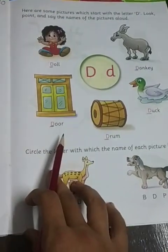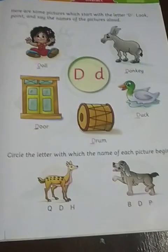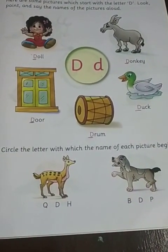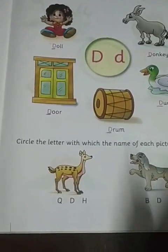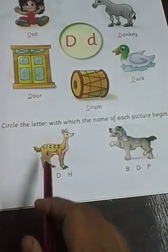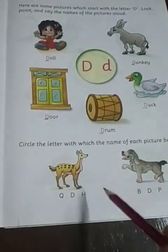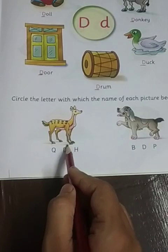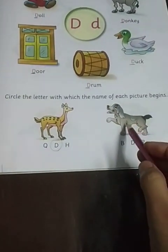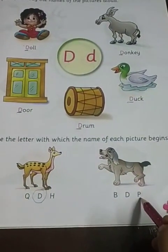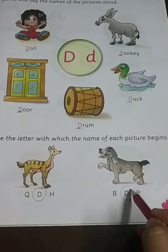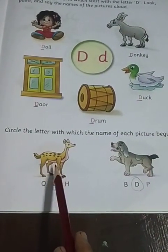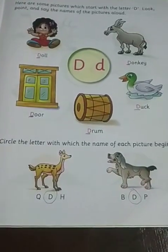Learn all the names. If someone asks you to name pictures that begin with letter D, you can answer: D for doll, D for dog, D for duck. Moving forward to the exercise — circle the letter with which the name of each picture begins. This picture is a deer, and deer starts with letter D. D for deer, D for dog, D for donkey, D for door, D for drum, D for duck, and D for Doraemon too!